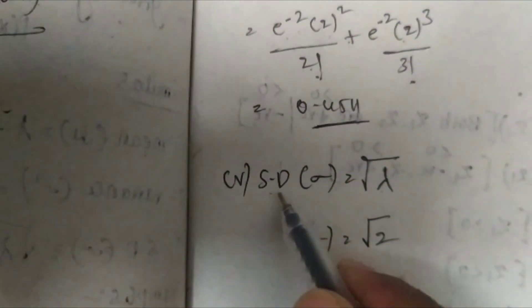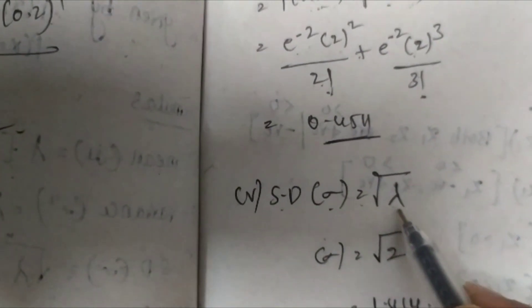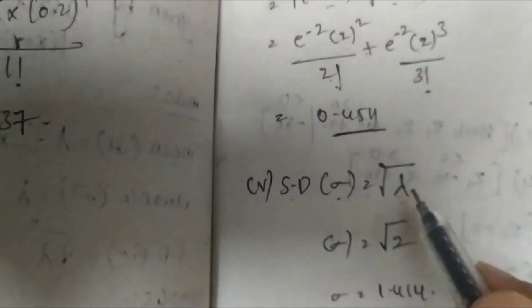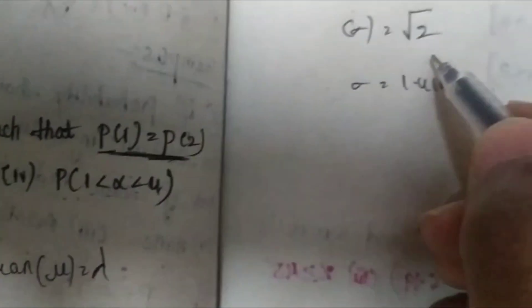Finally, we find the standard deviation σ. The formula is σ = √λ. Here λ = 2, so σ = √2 = 1.414.